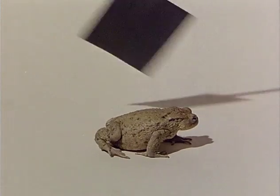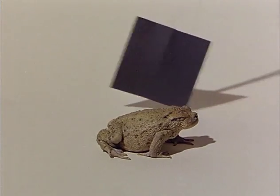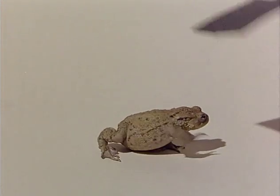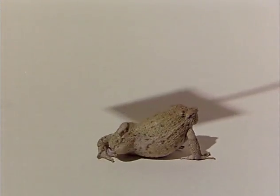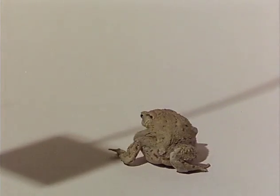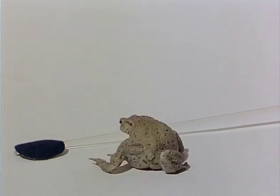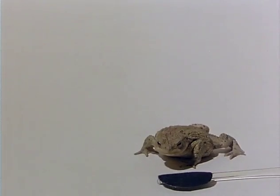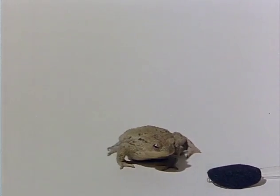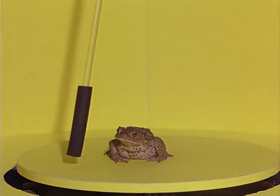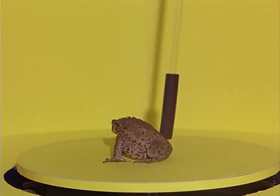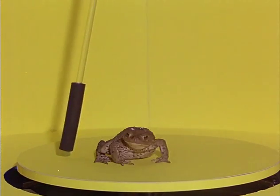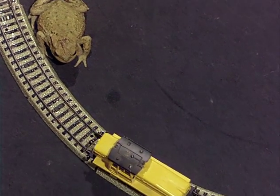The brain lesion toad responds to anything that moves with prey-catching. A large moving square, its shadow, a big disc, a stripe in anti-worm configuration. Even a toy locomotive is pursued by the brain lesion toad.